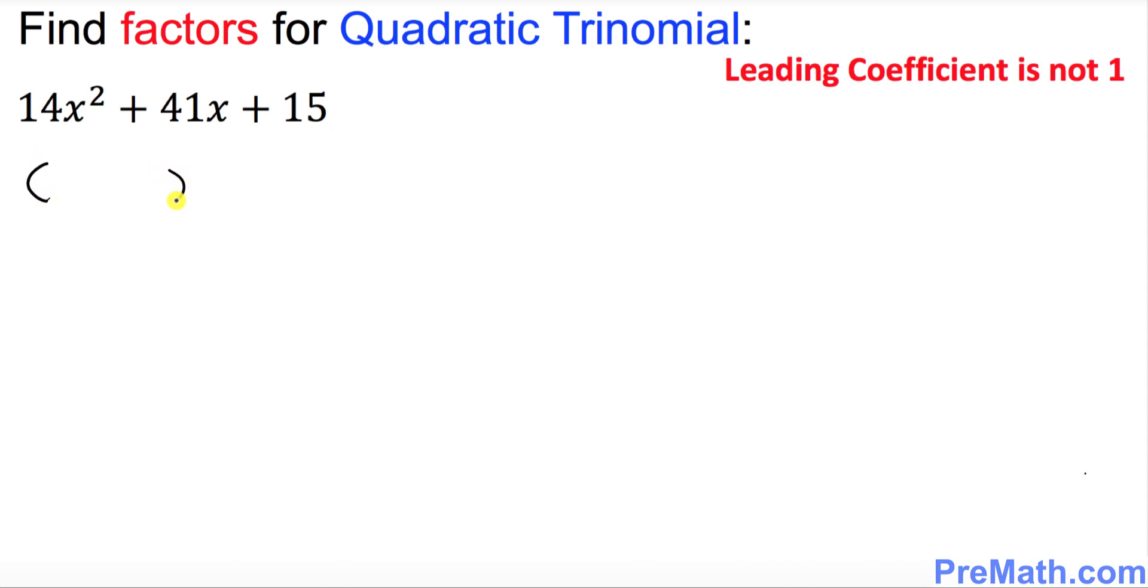So I want you to put down just simply two parentheses. The next step, I want you to just look at this part only, 14x. Just disregard this exponent. I want you to put down 14x in the first parentheses and 14x in the second parentheses as well.